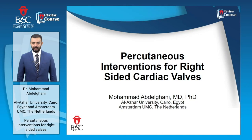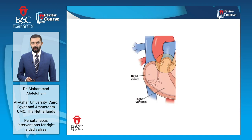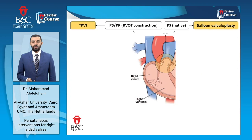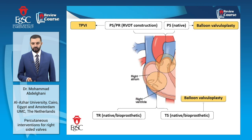This is Mohamed Abdul Ghani from Al-Azhar University, Cairo, Egypt, and Amsterdam University Medical Center in the Netherlands. It's a pleasure today to talk about transcatheter interventions for right side heart valves. The right side comprises many structures, including the tricuspid and the pulmonary valves, and many lesions of the native as well as surgically reconstructed pulmonary and tricuspid valves are amenable to several transcatheter valve interventions. We will go through these interventions throughout this lecture.